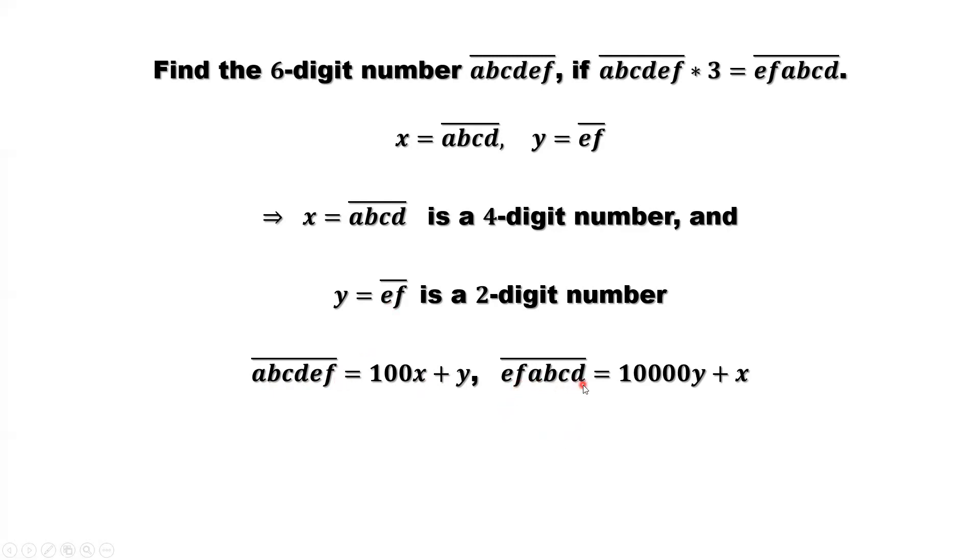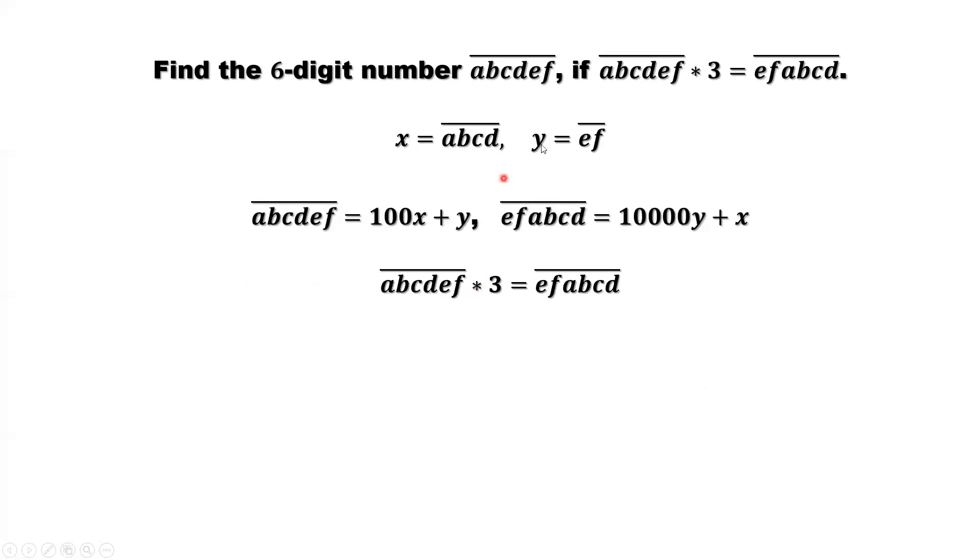efabcd. We swap the order. Put the last two digits first. After ef, we can see that there are four zeros. That's 10,000 times Y. Then plus X. From the given condition, abcdef times 3 equals efabcd. We have this result and this result. Plug in both results into this equation. We have 100X plus Y times 3 equals 10,000Y plus X.